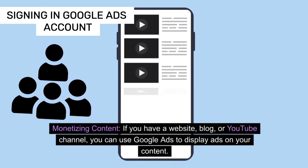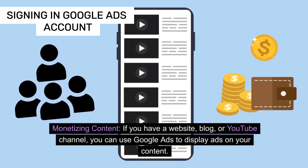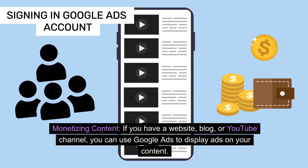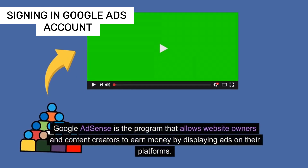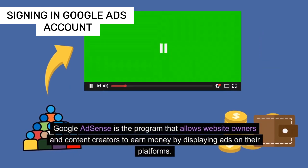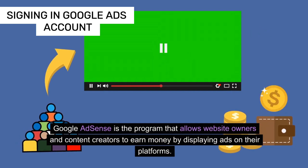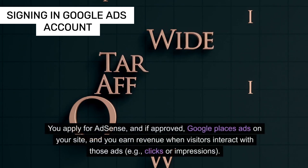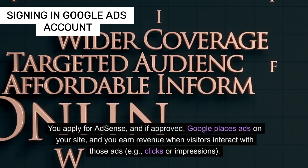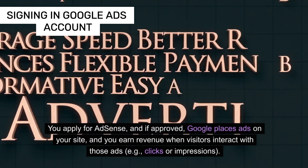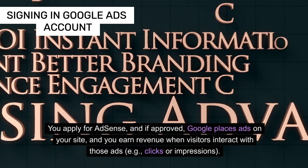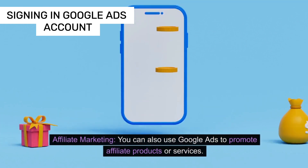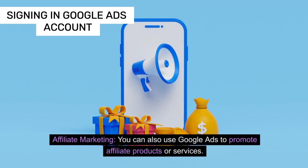Monetizing content: if you have a website, blog, or YouTube channel, you can use Google Ads to display ads on your content. Google AdSense is the program that allows website owners and content creators to earn money by displaying ads on their platforms. If approved, Google places ads on your site and you earn revenue when visitors interact with those ads through clicks or impressions.